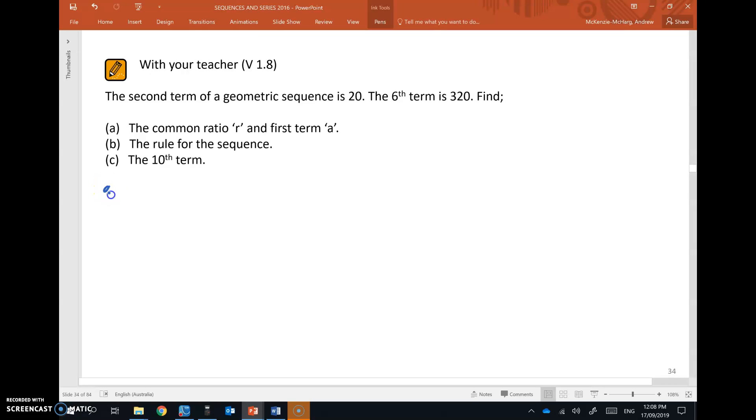So part A. Now basically we're told two terms in the sequence. We don't know the first term but we know the second term is 20. We don't know third, fourth or fifth term but we do know that the sixth term is 320. So just like the examples we did where we were finding the common difference based on the number of steps from one term to the next, or between the terms that are given,